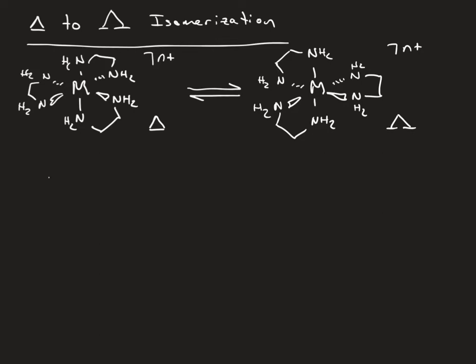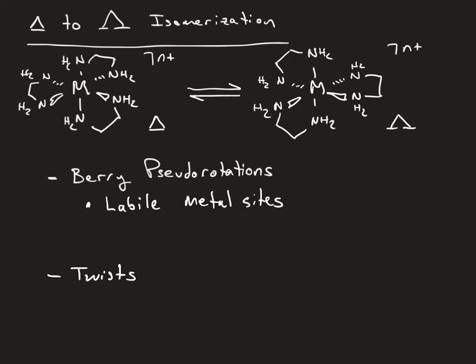This can break down into processes involving so-called Berry pseudorotations, or these can fall under twists. Berry pseudorotations are typically found in compounds that have so-called labile metal sites. In these, what you find is that ligand exchange is rapid relative to isomerization.